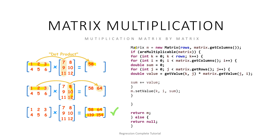In the code, we create a result matrix with the correct dimensions, then check whether the matrices are multiplicable by verifying that the column count of the first equals the row count of the second. We iterate through all rows of the first matrix and all columns of the second matrix, summing the dot products for each selected pair. We multiply each element of the first matrix with the corresponding element of the second matrix, add to a running sum, and set the result in the new matrix at position [k][i].